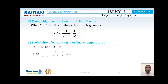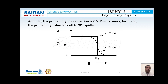The third case is the probability of occupation at ordinary temperatures. When we consider E = EF and T > 0 Kelvin, substituting the parameters in the main equation we get F(E) = 1 / [e^0 + 1]. Since e^0 = 1, the value of F(E) becomes 1 / 2, that is 0.5. So at E = EF, the value of F(E) is equal to 0.5.